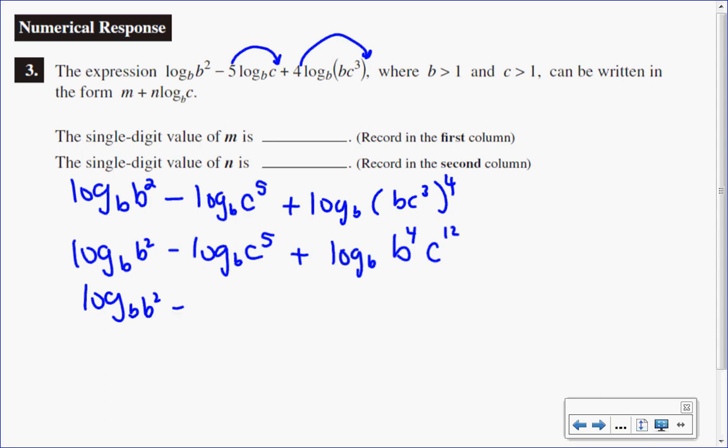since I have multiplied those arguments together, I can separate them into two individual logs by adding. So that will be log base b of b exponent 4 plus log base b of c exponent 12.